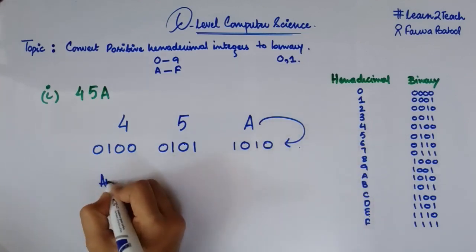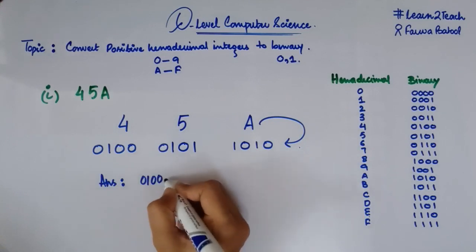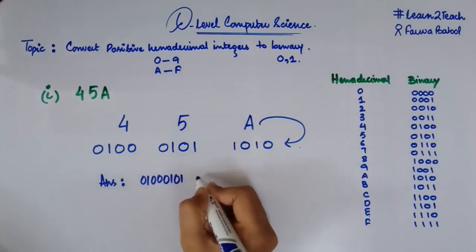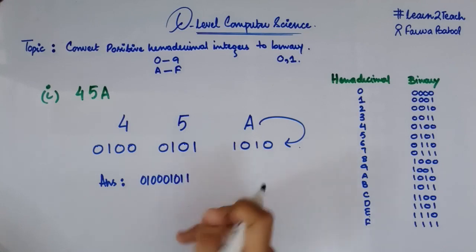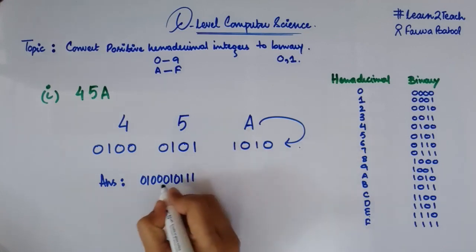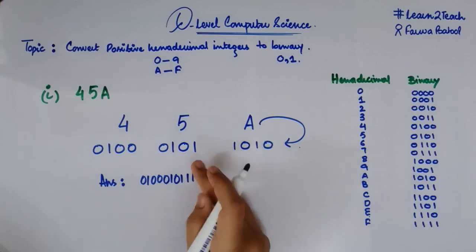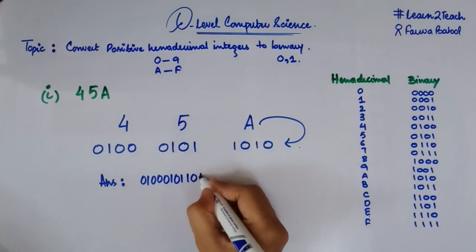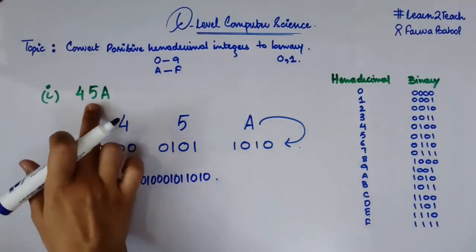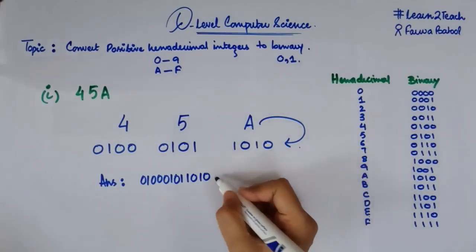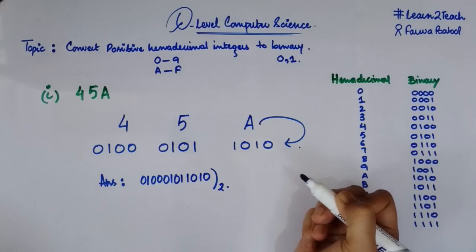So the final answer for the hexadecimal number 45A is 0100 0101 1010 in binary. This is how we have converted a hexadecimal number into a binary one. Let's take another example.